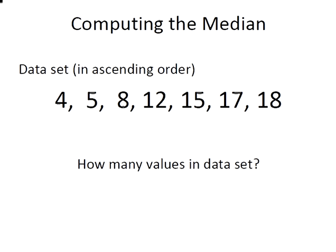How many values are in the data set? Well there are actually 7 values and just as a remark 7 is an odd number, that's important.